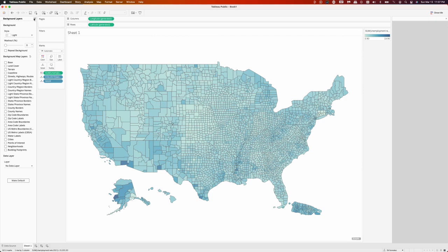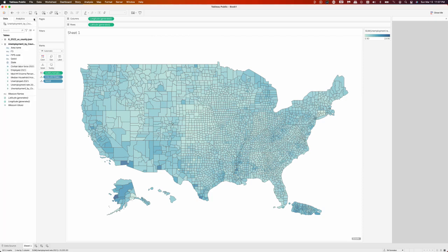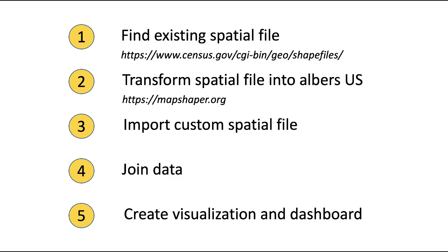That being said, this map is far from perfect. There are many things we can do to make it better — from changing the color palette to even changing the calculations we use in the background to distribute that color palette. But that's a topic for another day. In the meantime, we can see that creating an Albers view map in Tableau is fairly easy with a few simple steps. If you need more information, I will be posting some more detailed instructions online and will include the link in the description below.